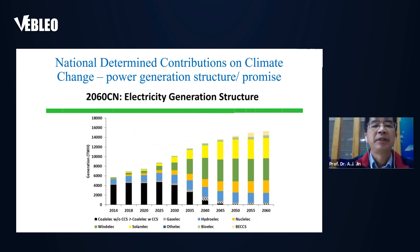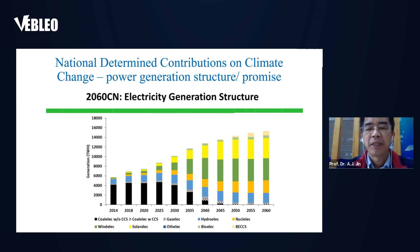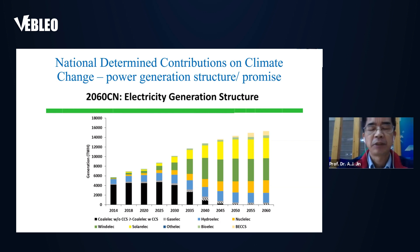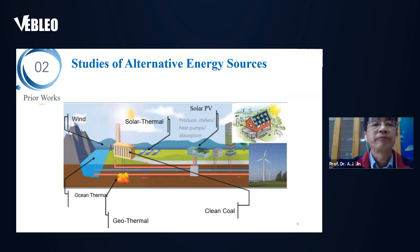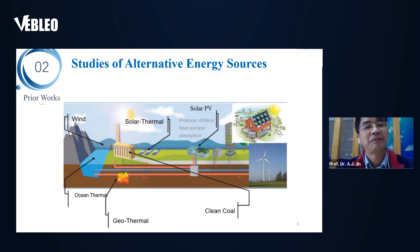This slide shows the electricity generation structure by color coding — you can see coal, gas, hydro, and nuclear electricity by partition. Biofuel is shown in green and solar electricity in yellow. You can see the increasing percentage in terms of power generation, measured in terawatt hours. We have done many prior works in my group and company, as well as collaborating with different groups to study alternative energy sources.